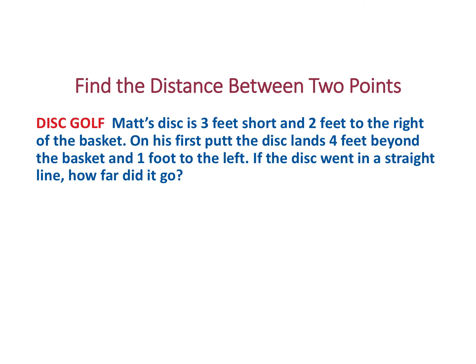The first example we're applying it in is disc golf, which is very similar to golf, except you're using a Frisbee. Matt's disc is three feet short and two feet to the right of the basket. I'm just going to draw a coordinate plane really quickly here. It is two feet to the right, so we'd go over two. And short would be below the axis. So three would be negative three here. That's where our point would be. On his first putt, he's going to try to get it to this point zero, zero. That will be our hole in this case.